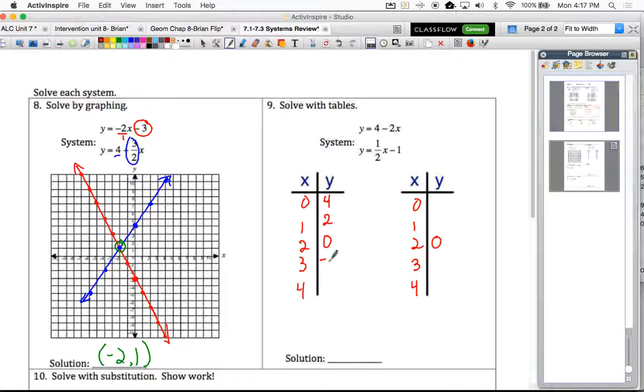So negative 2, negative 4, and then same thing. This one, notice our y-intercept is negative 1 here, and we're increasing by a half each time. So that would be negative 1 half...